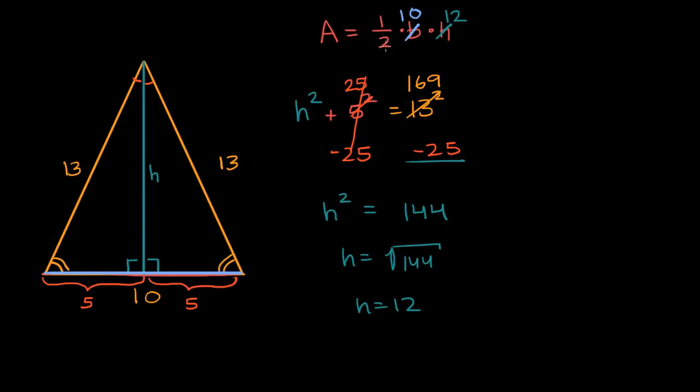Now we just have to compute one half times 10 times 12. That's just going to be equal to one half times 10 is 5 times 12 is 60. 60 square units, whatever our units happen to be. That is our area.